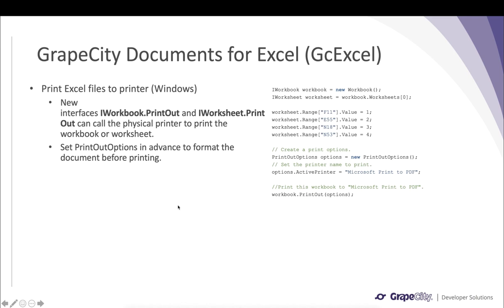One more significant feature in v5 is the ability to print Excel files directly to a printer, supported on Windows platform. The IWorkbook.PrintOut and IWorksheet.PrintOut interfaces have been introduced — they can directly call a physical printer and send your workbook or worksheet for printing. We have also added a PrintOutOptions class to specify certain options before printing, so you don't have to manually configure those settings in MS Excel. This allows you to programmatically print Excel files using these two new interfaces.